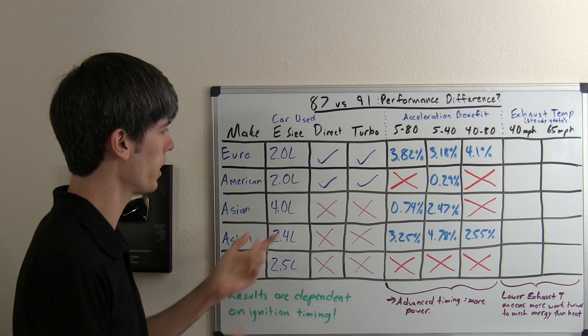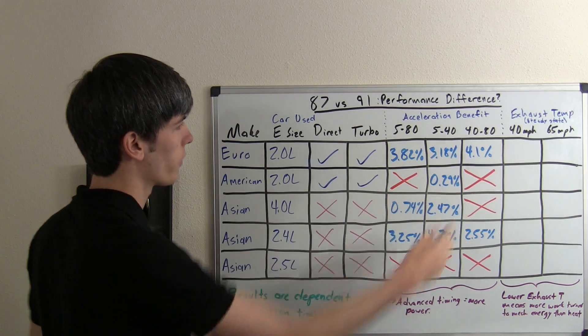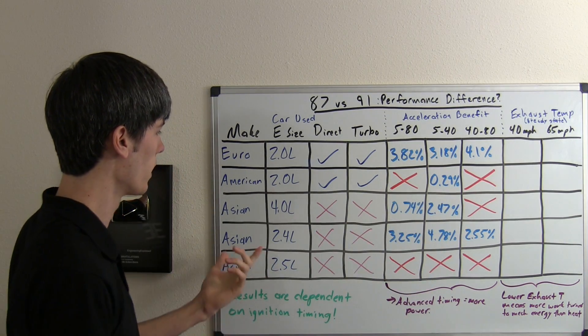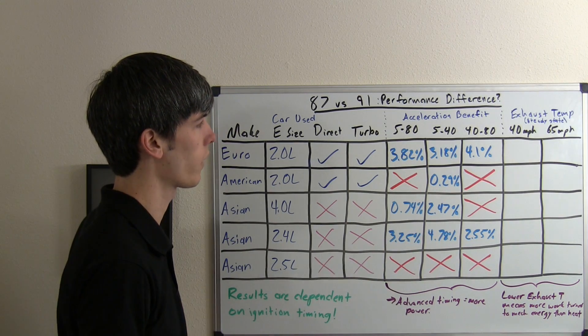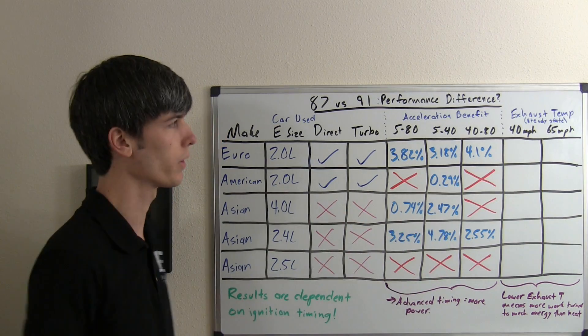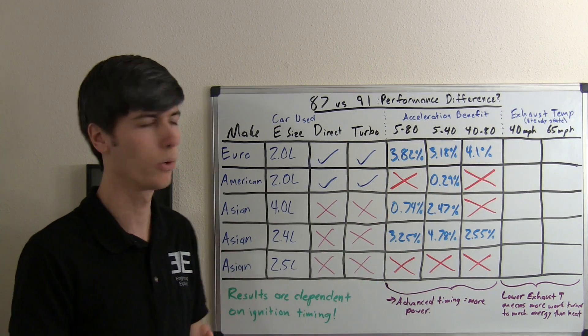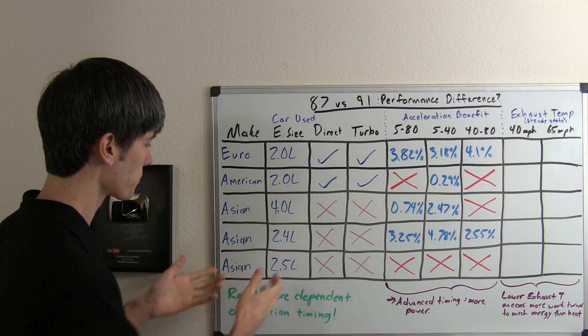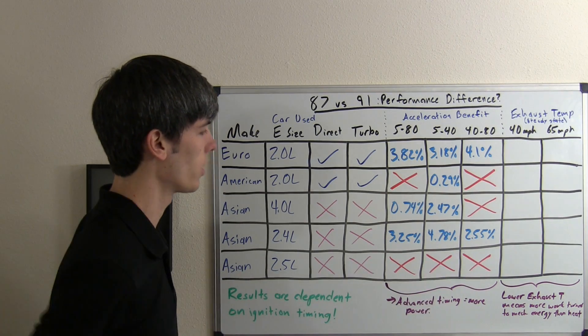This Asian car with the 4-liter had better acceleration on the low end, no difference from 40 to 80. The Asian with the 2.4 had significant improvement: 3.25% overall, 4.78% from 5 to 40, and 2.5% from 40 to 80—once again significant improvement through the use of premium fuel. The Asian vehicle with the 2.5 liter had basically no improvements.